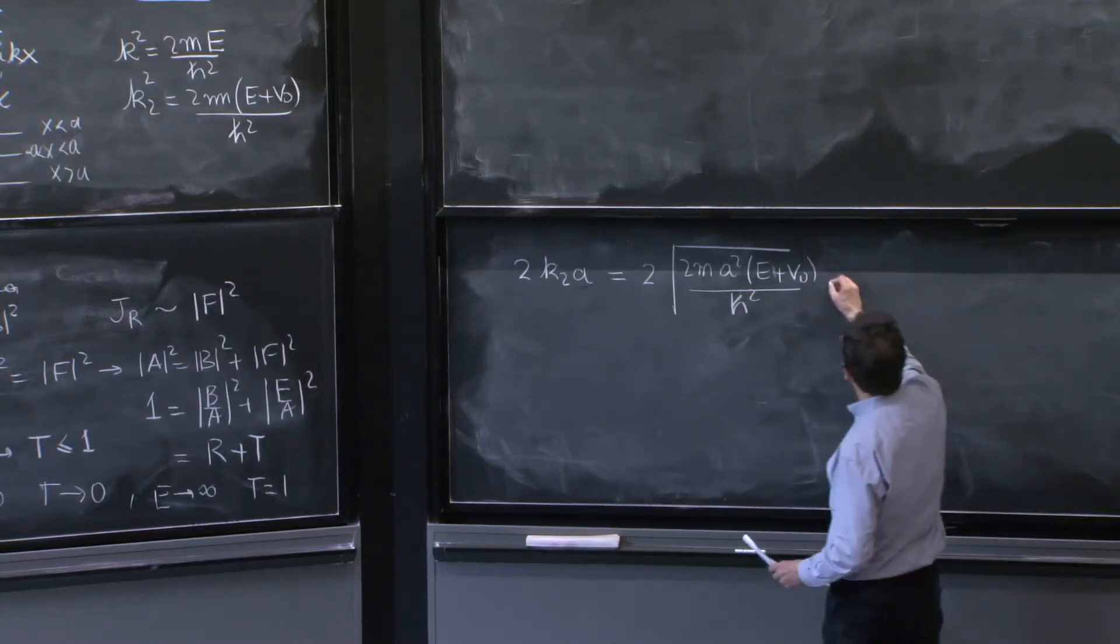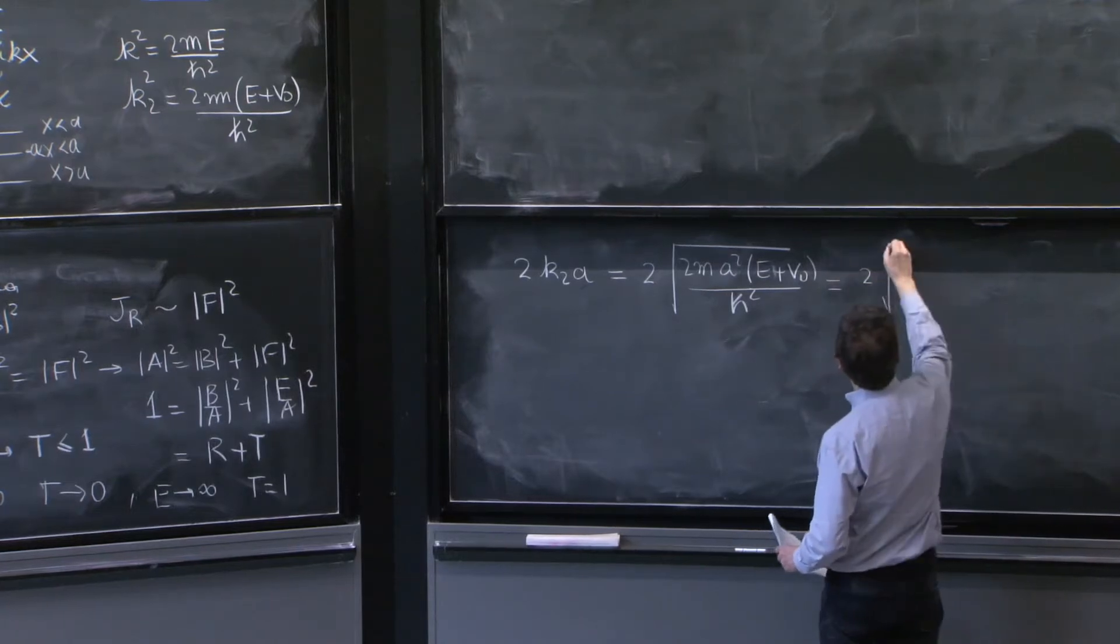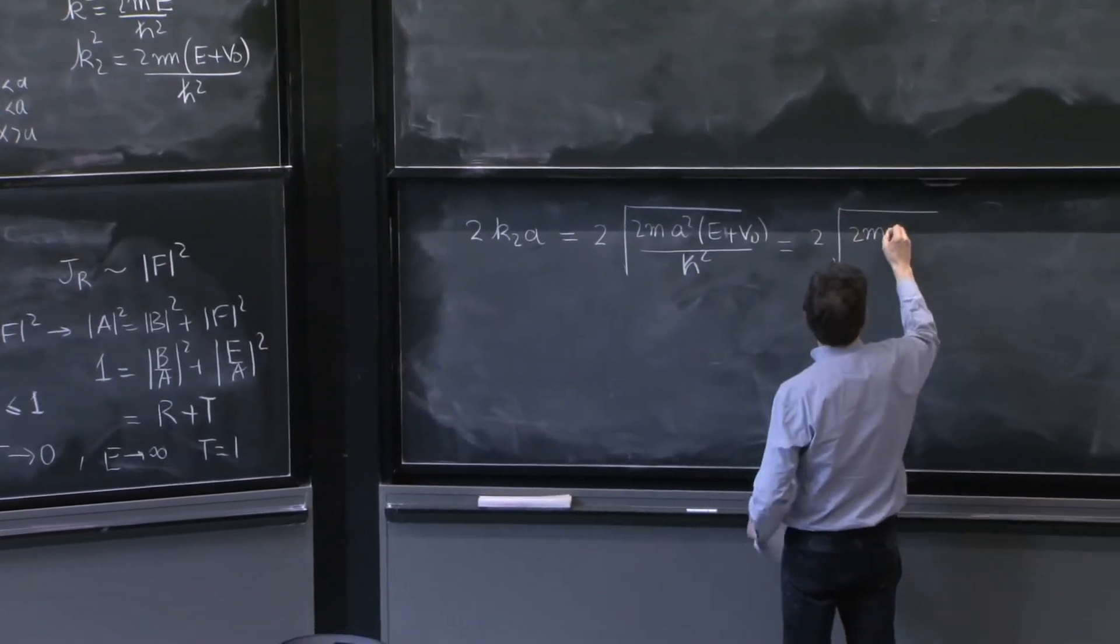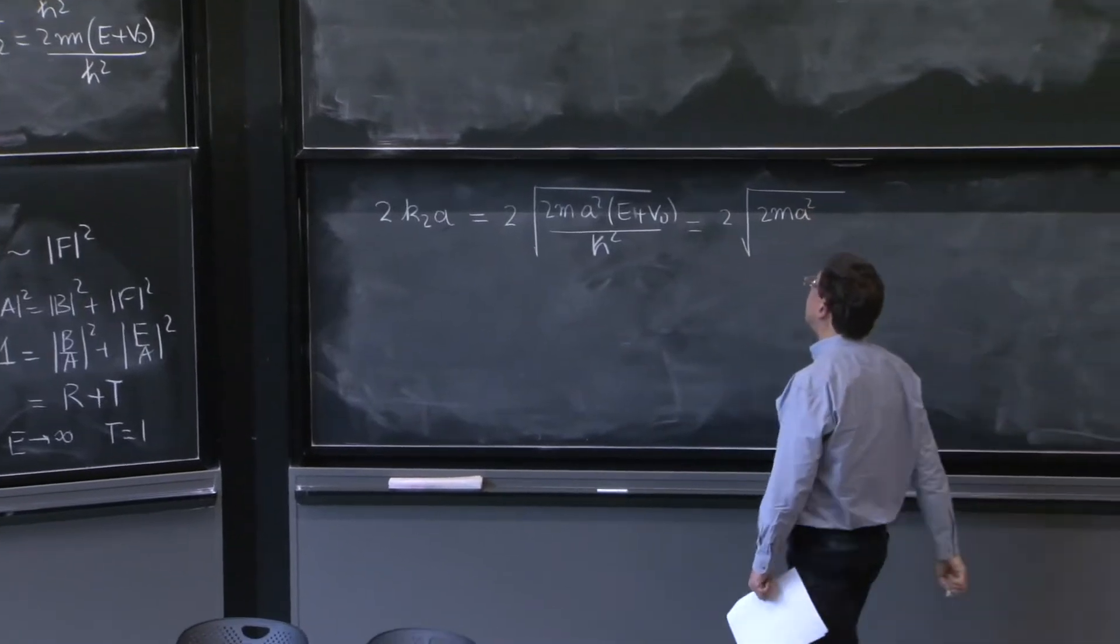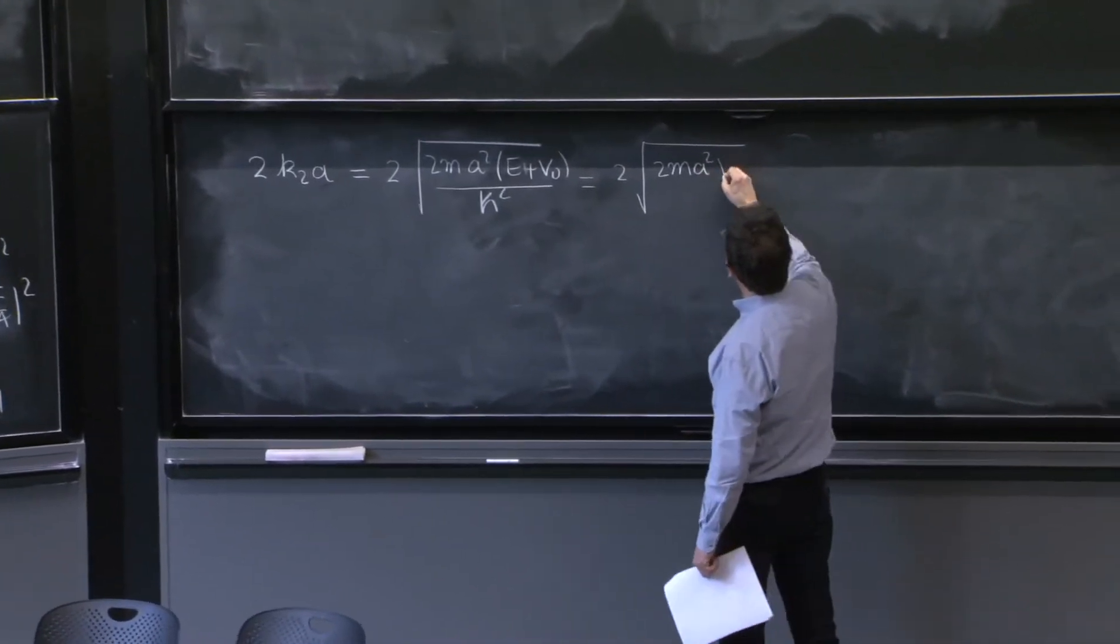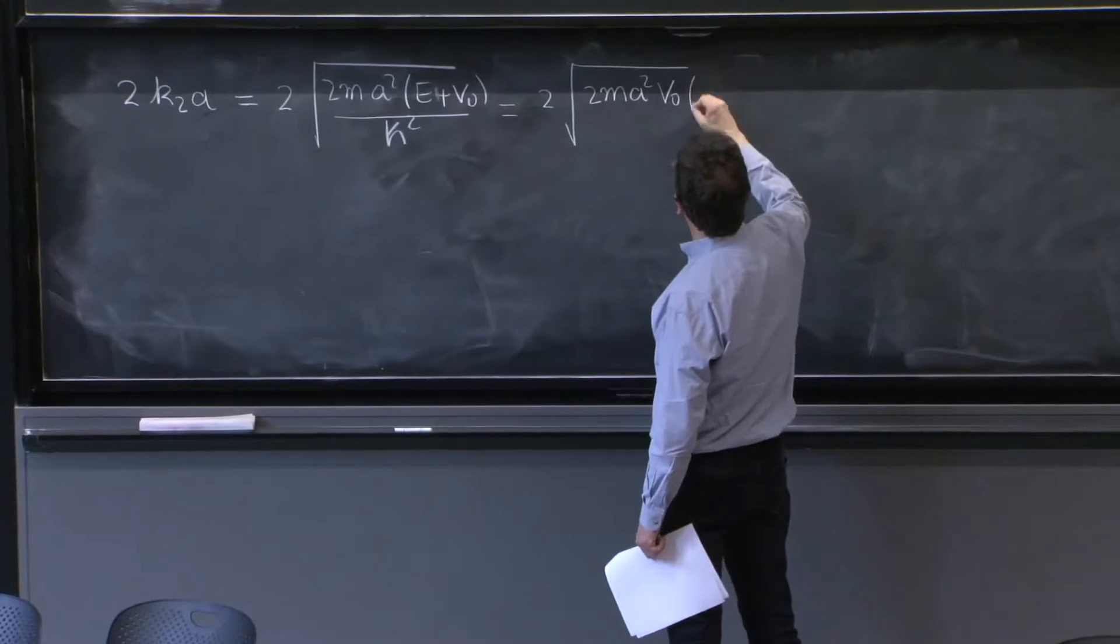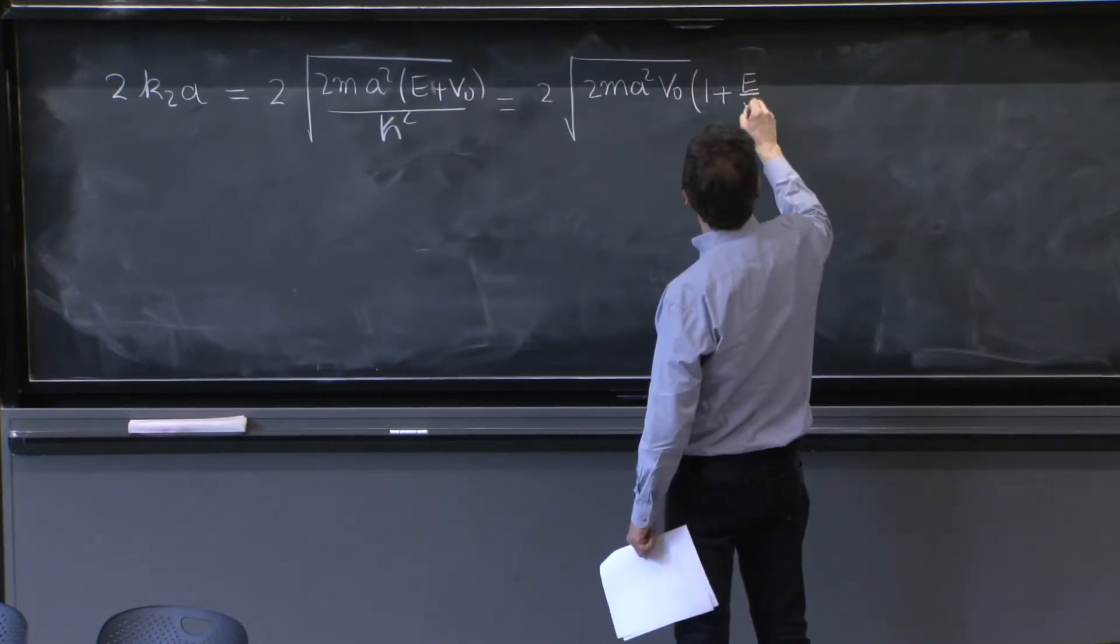So what do we have here? 2 times square root of 2m a squared. Let's factor a v0. So you have 1 plus e over v0, and you have h squared here.